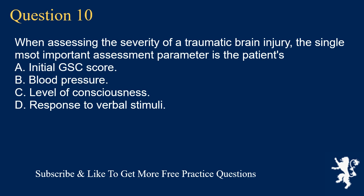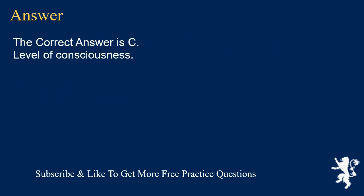Question 10. When assessing the severity of a traumatic brain injury, the single most important assessment parameter is the patient's: A. Initial GCS score. B. Blood pressure. C. Level of consciousness. D. Response to verbal stimuli. The correct answer is C. Level of consciousness.